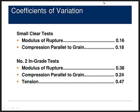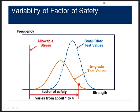Here's a look at why we consider wood to be a highly variable building material. At the top are the coefficients of variation for small clear tests; at the bottom for number two in-grade tests. Because we've included the defects, the coefficient of variation goes up considerably — more than double for the modulus of rupture for number two in-grade tests. The higher the grade, the slightly less variability, but still much more variable than the small clear tests.